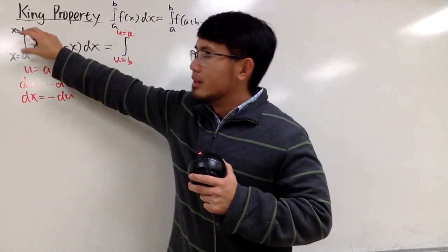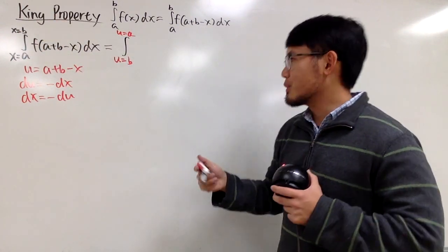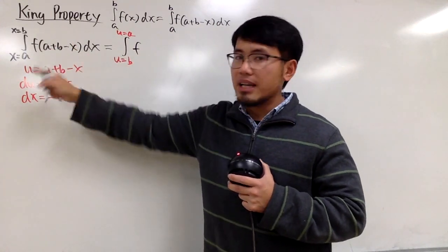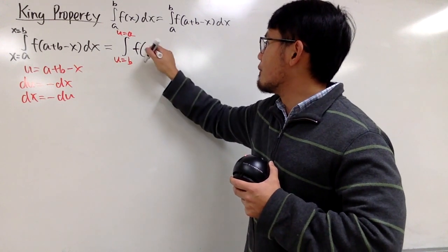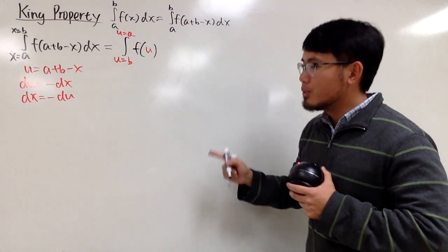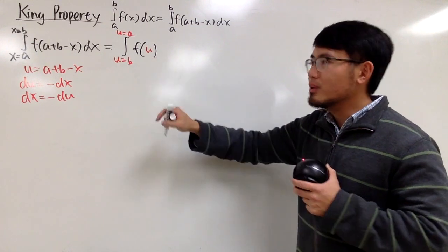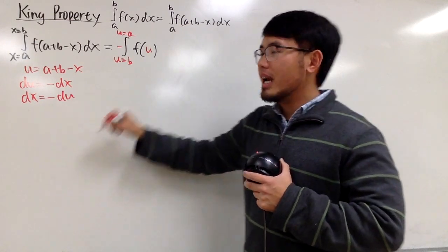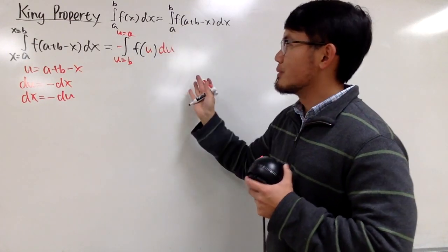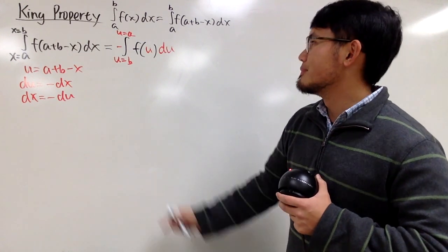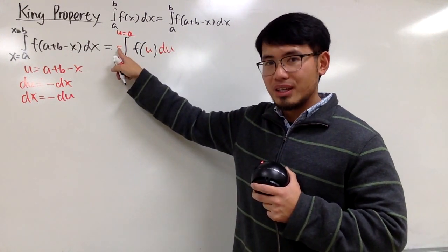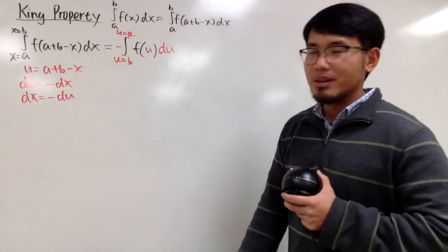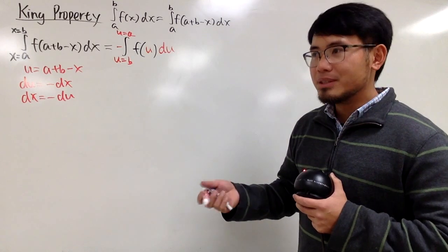You can see that the limits of integration are switched. So we now have f of u — and please be sure to say f of u — with the negative out front from dx equals negative du. This negative allows us to switch the order of the limits of integration.